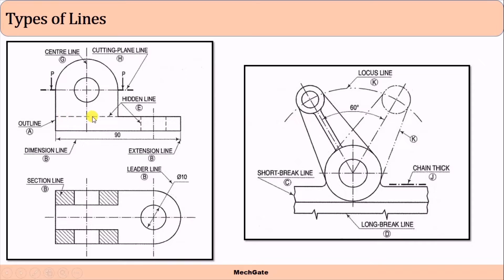This is called the hidden line or dotted line, used to represent the hidden edge of the object. Similarly, since this hole is not visible in the front view, we have to draw this hole using a hidden line. Whenever there is a circular object, its center line would always be drawn slightly outside the main object. This is called the cutting plane line — it is the same as the center line but its ends are a little bit darker.